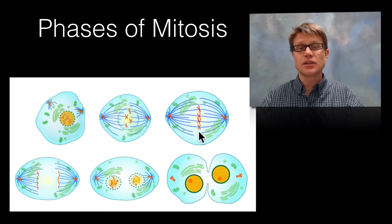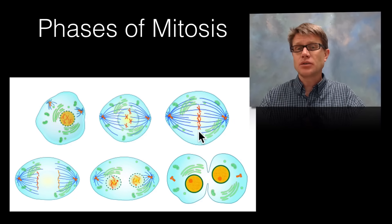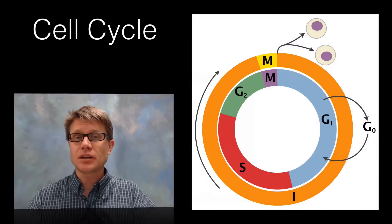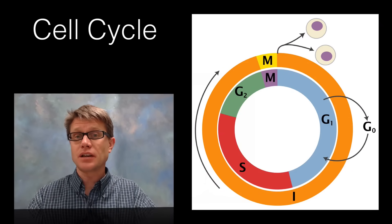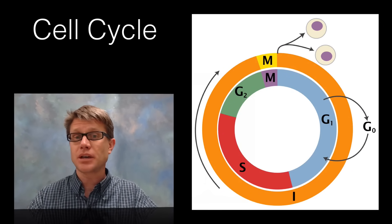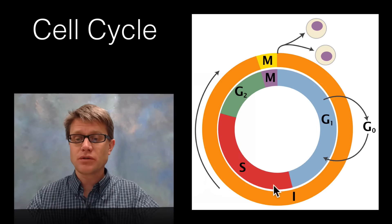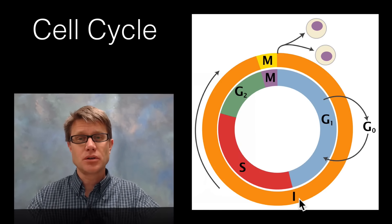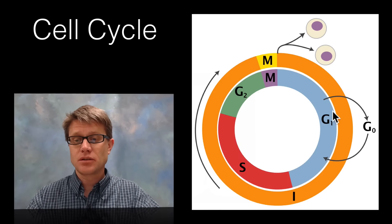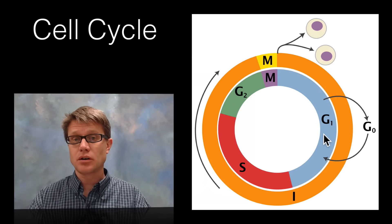It's also how you replace cells as they die over time. Mitosis is technically part of the cell cycle, and a cell cycle is how a cell duplicates itself. Most of the time is spent in this orange phase called interphase. During the G1 part of interphase the cell is growing — getting larger.